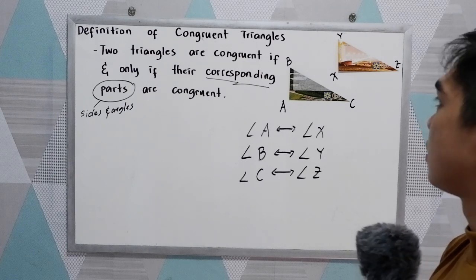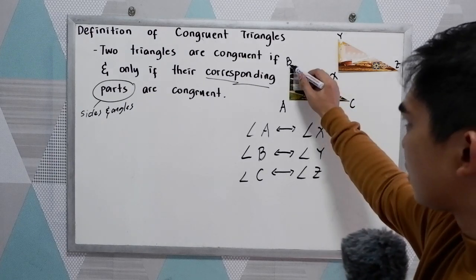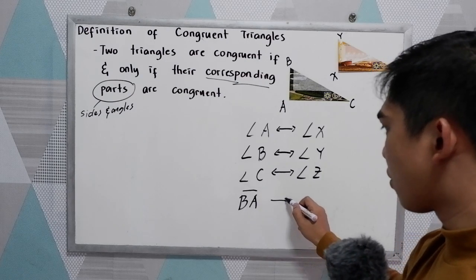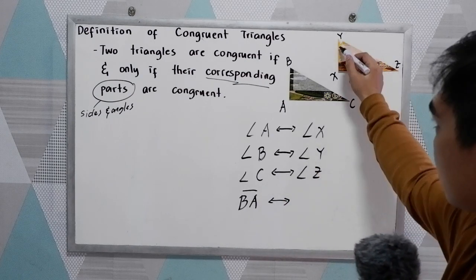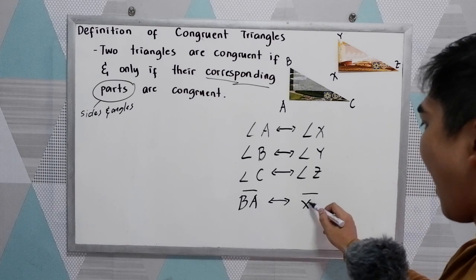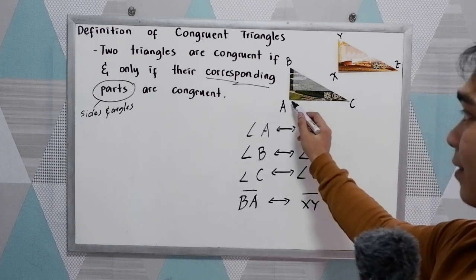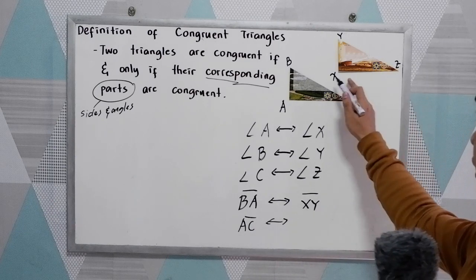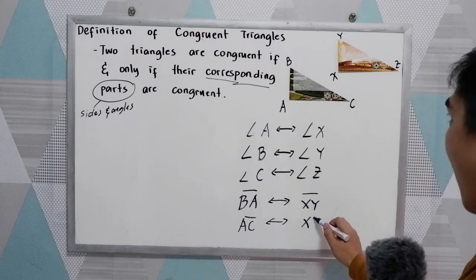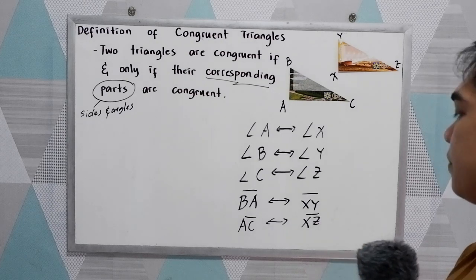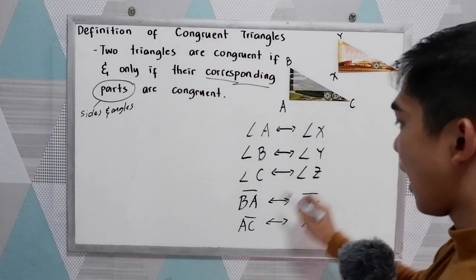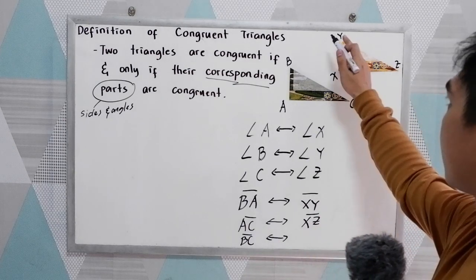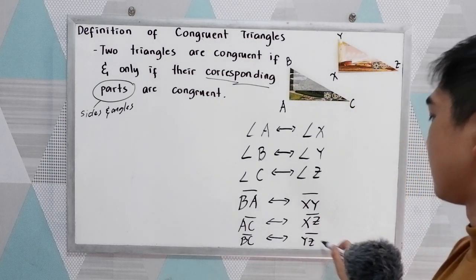Now how about the sides? Side BA corresponds to side XY. Side AC corresponds to side XZ. And lastly, side BC corresponds to side YZ.